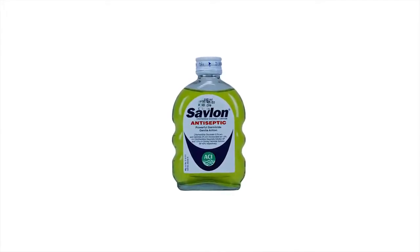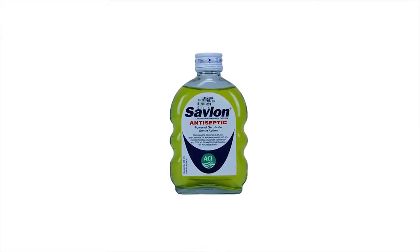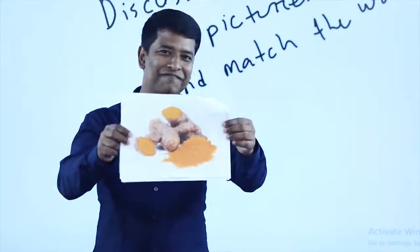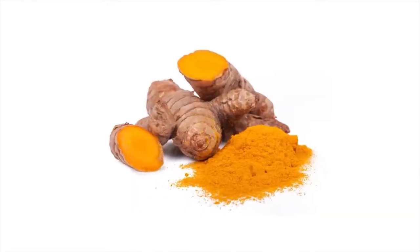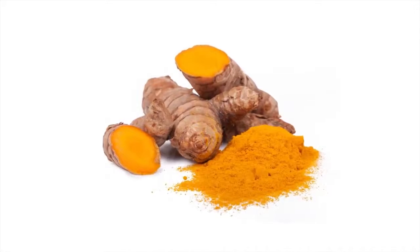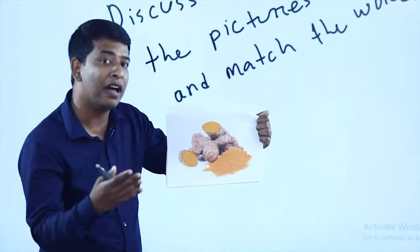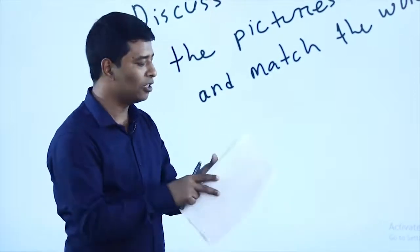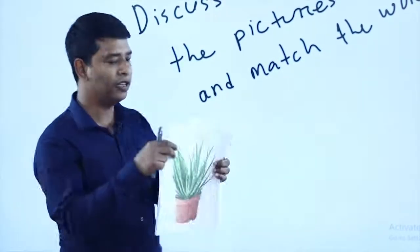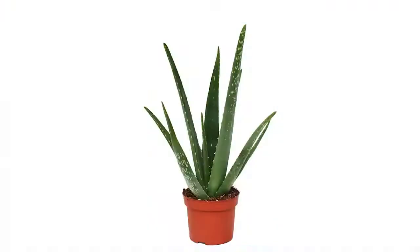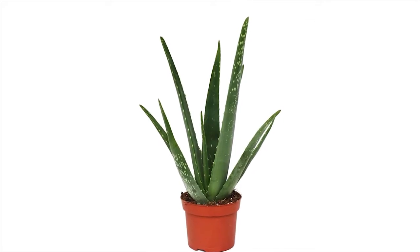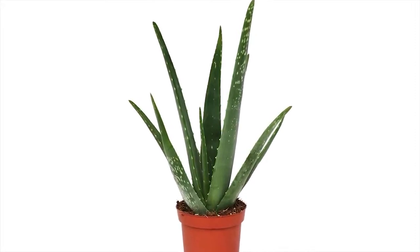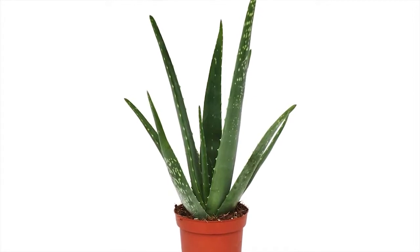The next picture is about a medicine we use for cleaning our room; we use it as an antiseptic sometimes — it's Savlon. And this very colourful yellow one we use in our curry — do you know it? Its name is turmeric, in Bangla 'halud'. And the last picture is a very common plant — the name is aloe vera. We drink juice from aloe vera; it's very healthy.